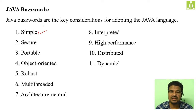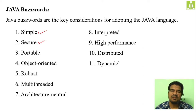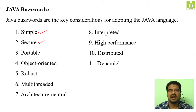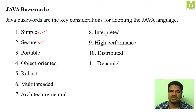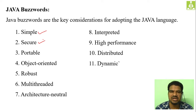Next is portability. There is one important statement related to Java: 'write once, run anywhere.' You need to write the code only once, compile it, and get the byte code from that source code. The byte code is something like machine language code in regular programming — similar to executable code in C and C++.